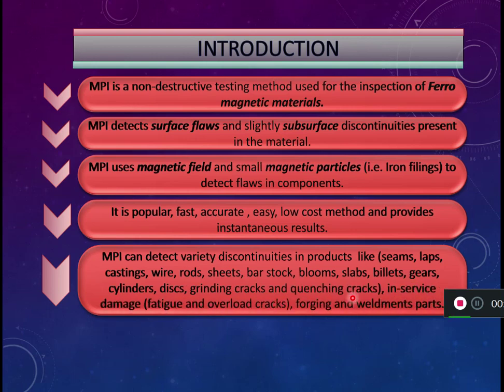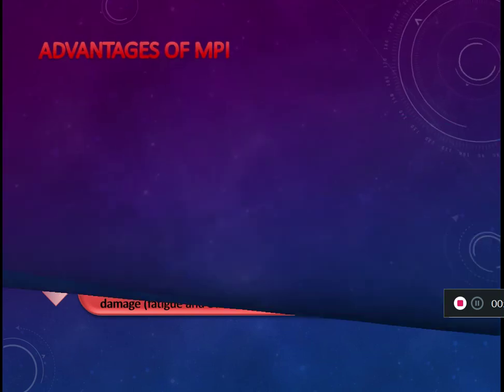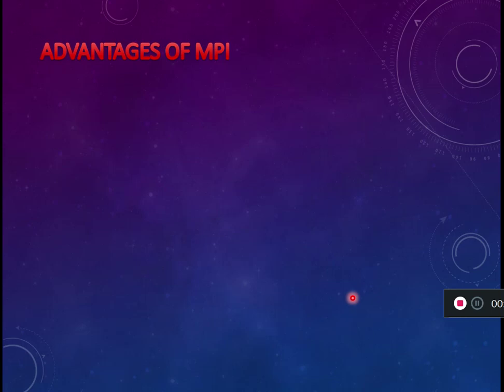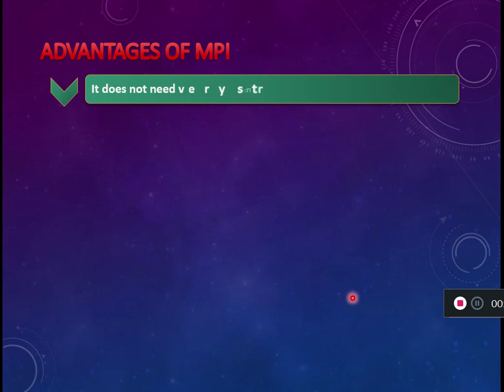It is the method used to find discontinuities like seams and laps in materials such as castings, forgings, and billets. Every method has its own advantages and disadvantages. Now let's look into the advantages of MPI. First, it does not require a stringent pre-cleaning operation — pre-cleaning is not critical in this process.